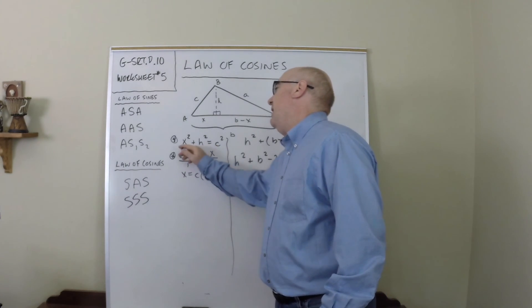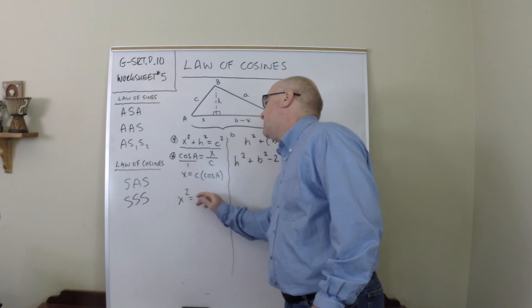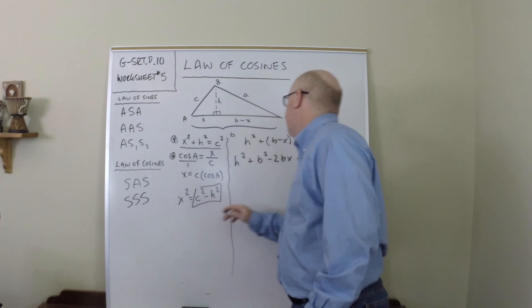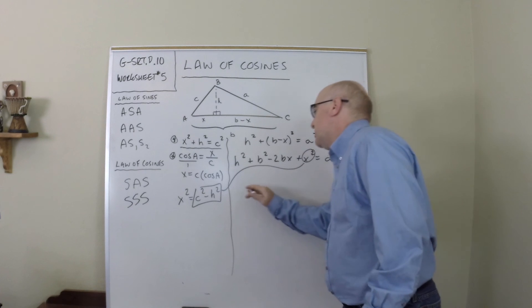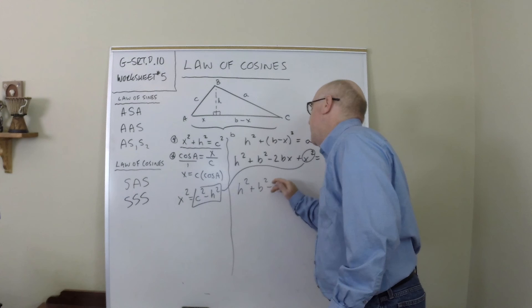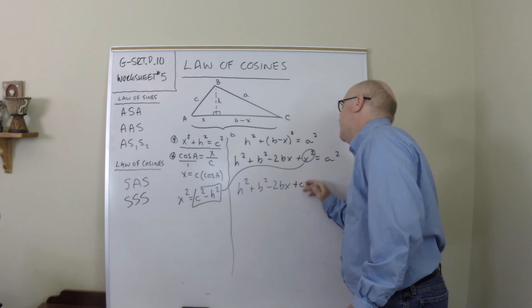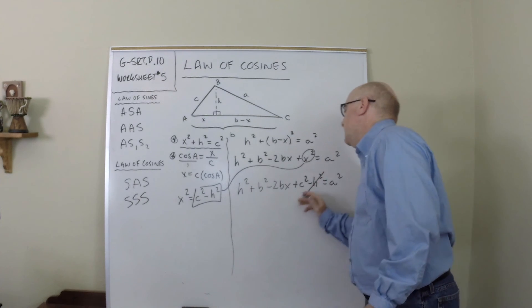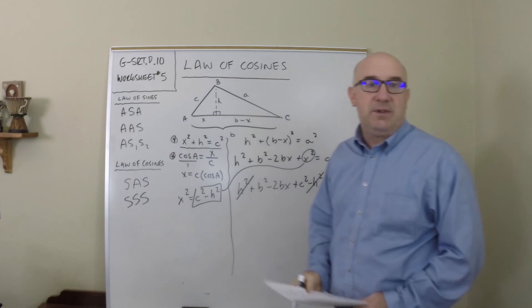If I alter this to be x squared equals c squared minus h squared, that can now be placed right in here. So let's do that. That would be h squared plus b squared minus 2bx plus c squared minus h squared equals a squared.